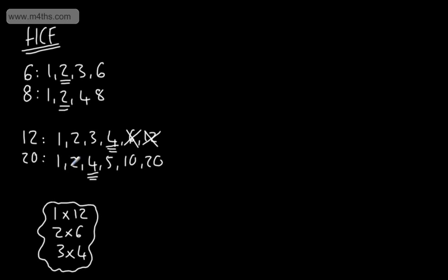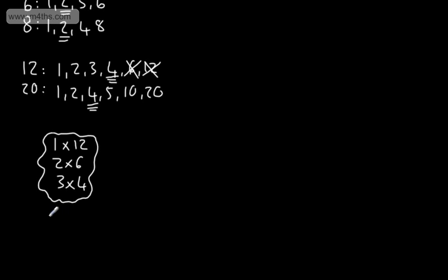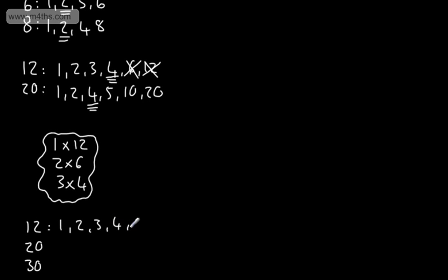So that's finding the highest common factor of two numbers. We might have another number added to the list — say 30. So 12, 20, and 30. If I list out the factors of the smallest one, we've got 1, 2, 3, 4, 6, and 12. I say to myself, does 12 go into 20 and 30? The answer is it goes into neither without a remainder.